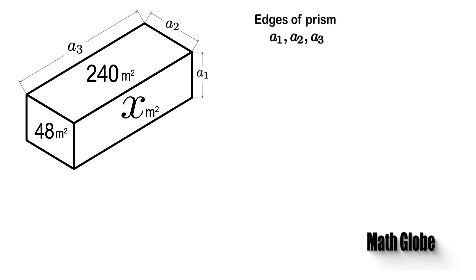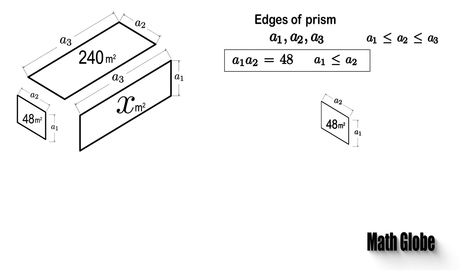Then without loss of generality, we assume that a1 is less than a2, and both less than a3. Next from this, we note that edges a1 and a2 will form the faces whose area equal to 48.